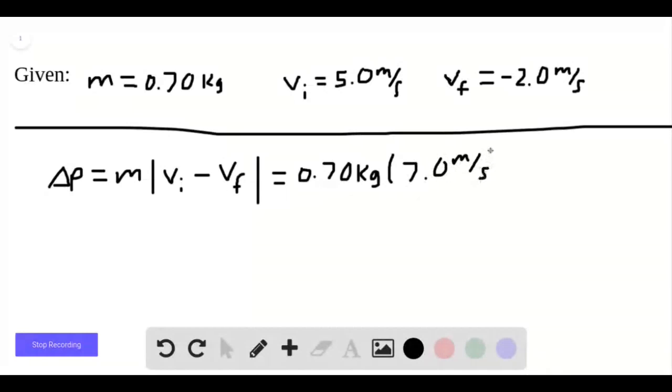If you carry out this calculation, this comes out to be 4.9. And then units for momentum are kilograms times meters per second. You can box that in as our solution. We'll be at the next one. See you later.